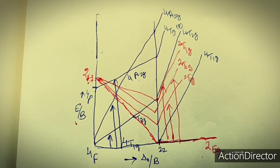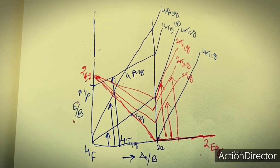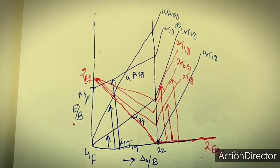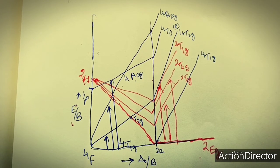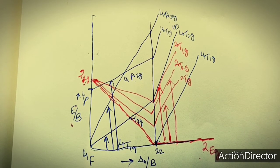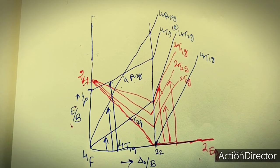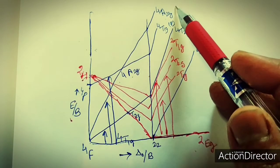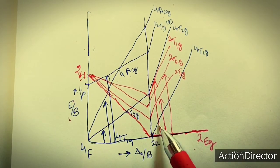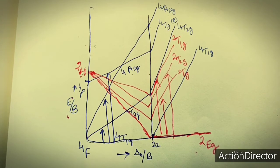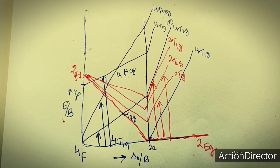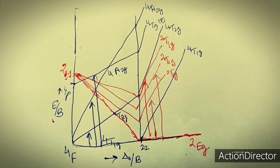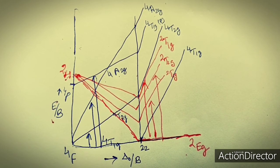In this way we can draw any Tanabe-Sugano diagram. First, draw the left half for weak field (easy, as Orgel diagrams have already been drawn). At the breakage point, for D4, D5, D6, and D7 configurations, the energy of all weak field terms increases after the breakage point. The strong field terms first decrease and then increase. Simple Tanabe-Sugano diagrams can also be drawn for D1, D2, D3, D8, and D9 configurations.